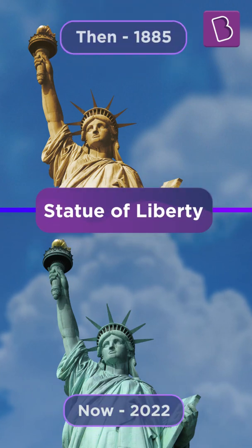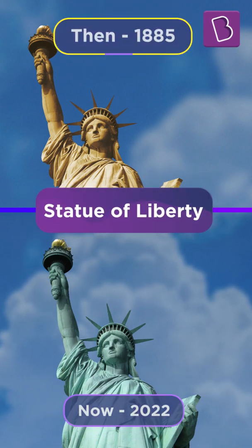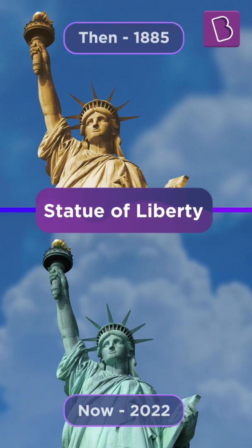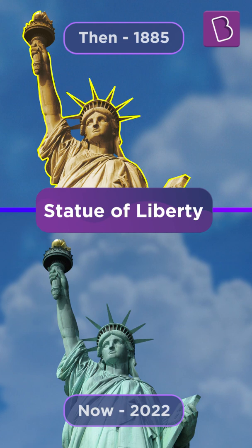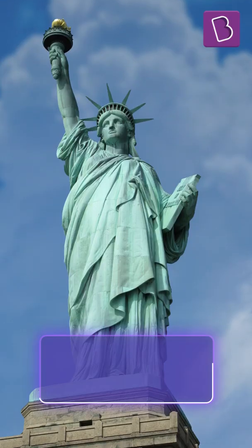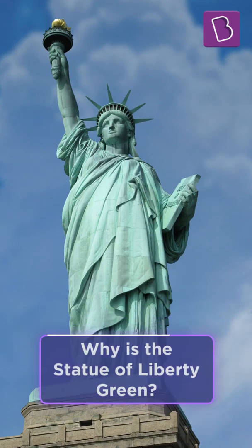When constructed in 1885 by the French, the Statue of Liberty was bright reddish copper brown. So, how did the statue turn this iconic green?